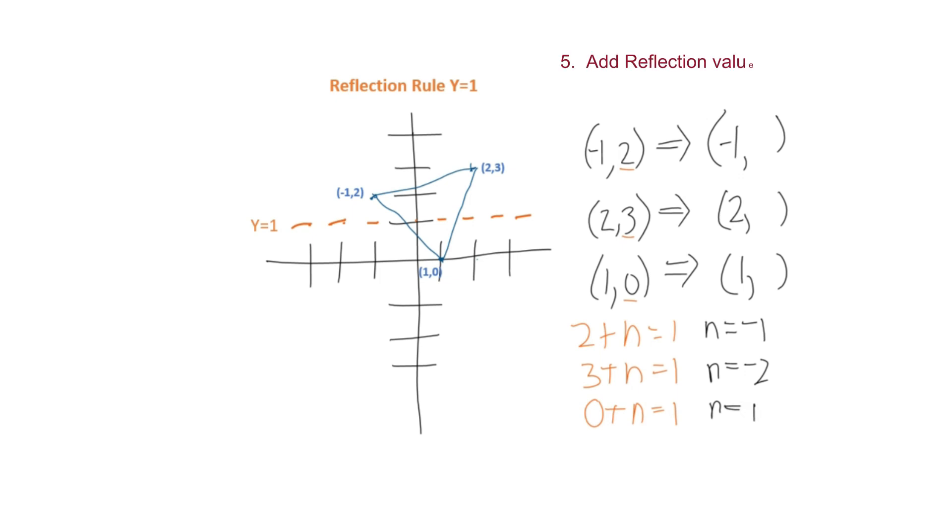Now we add our reflection value, which is 1, to each n value to get our new y coordinates.